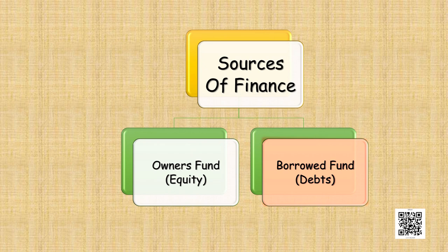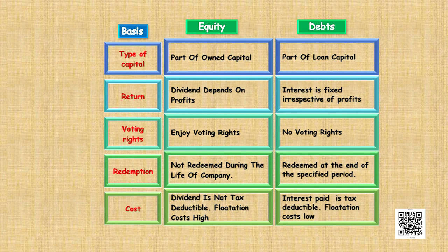Let us understand the difference between equity and debt. On the basis of type of capital, equity is a part of owned capital whereas debt is a part of borrowed capital. On the basis of return, dividends are expected on equity because it is a part of profit and shareholders are the owners of the company. Whereas debt holders are a liability to the company and they are paid interest on it.